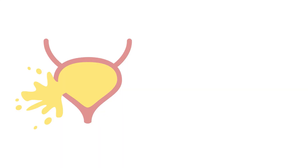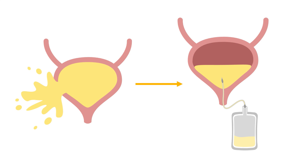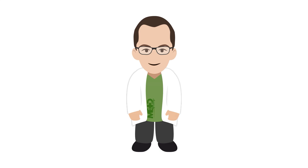Even if there is a large injury, extraperitoneal bladder rupture can usually be managed non-operatively with catheter placement, which will facilitate healing of the bladder wall. In trauma cases, be sure to verify whether you are dealing with an intraperitoneal or extraperitoneal bladder rupture.